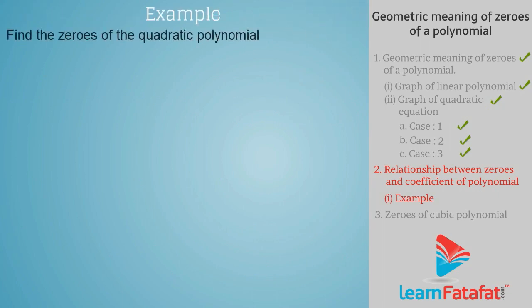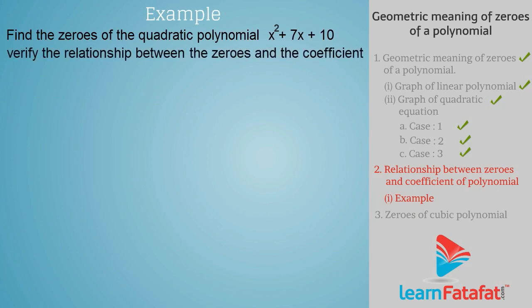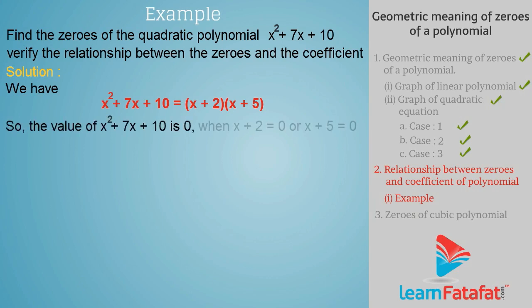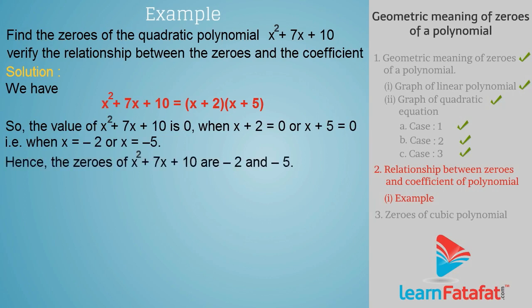Example: Find the zeros of the quadratic polynomial x² + 7x + 10 and verify the relationship between the zeros and the coefficients. Solution: x² + 7x + 10 = (x + 2)(x + 5). The value is 0 when x + 2 = 0 or x + 5 = 0, that is, when x = -2 or x = -5. Therefore, the zeros of x² + 7x + 10 are -2 and -5.